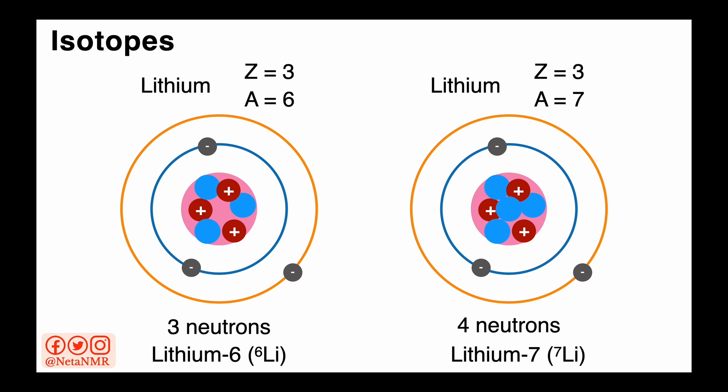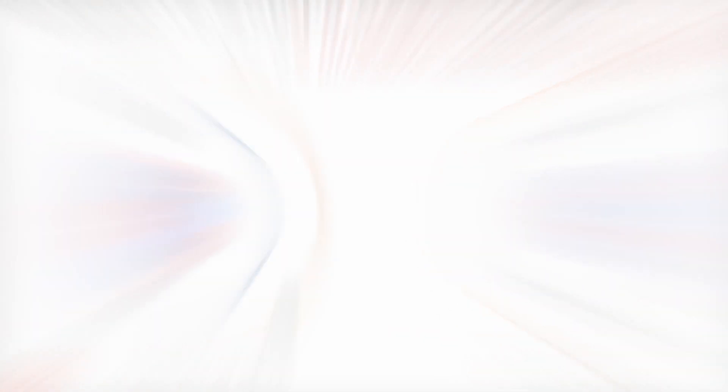Besides these two stable isotopes, lithium also has many radioactive isotopes. A radioactive isotope is an unstable form of an element because of its unstable nucleus. It regains stability through the radioactive decay.